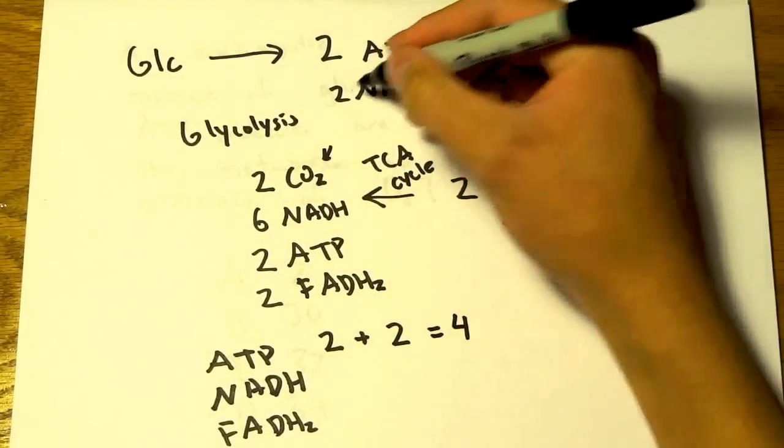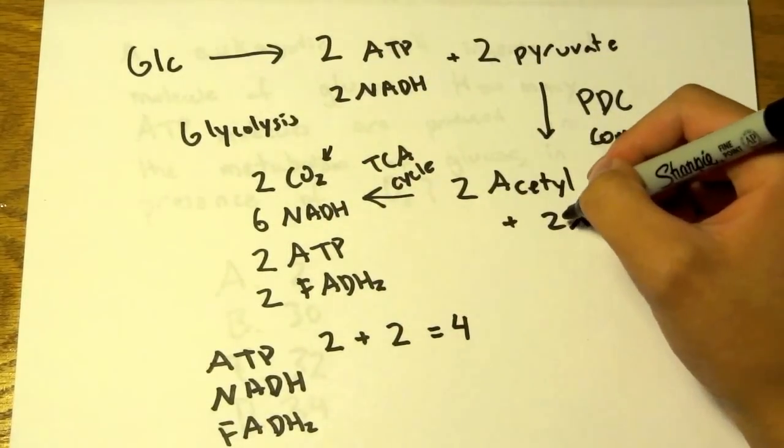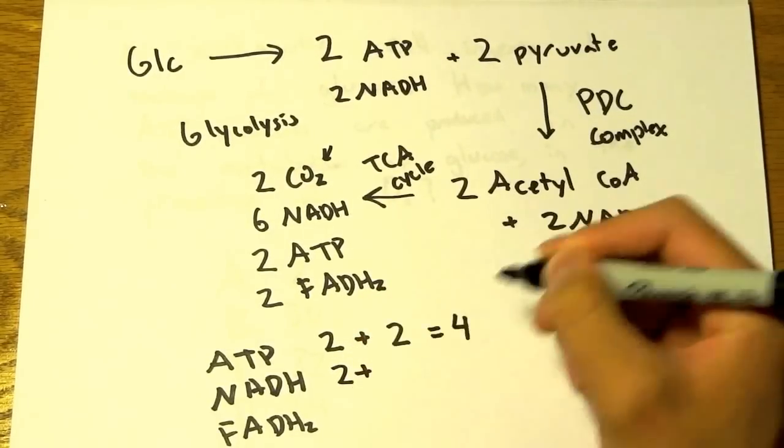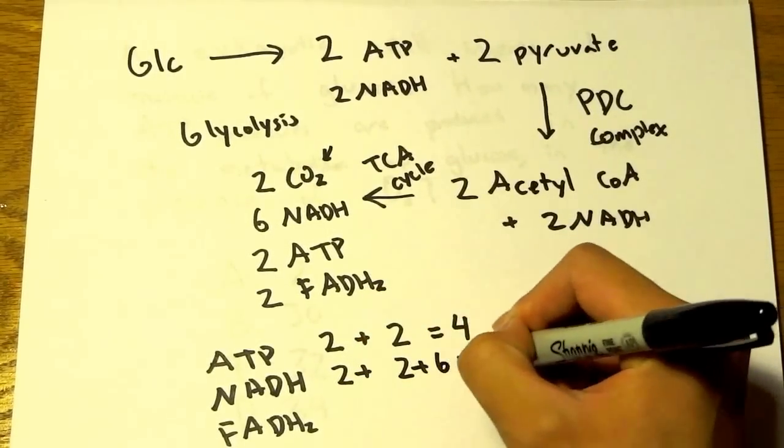For NADH, we have 2, 4, and 10. So 2 plus 2 plus 6 equals 10.